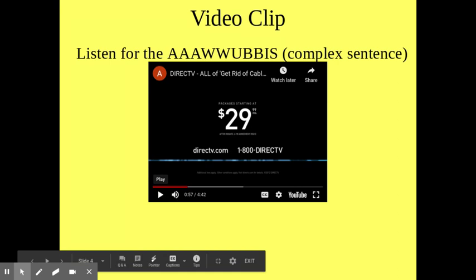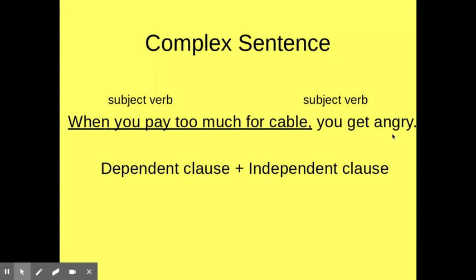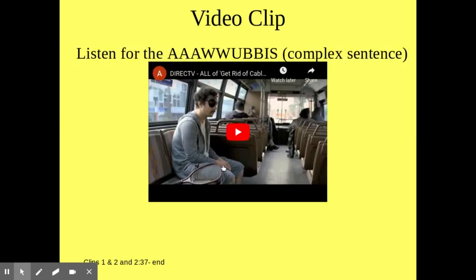Pretty funny clips, but notice the AWOOBIS in action — the complex sentence in action. 'When you pay too much for cable, comma, you get angry.' The first part has a subject and verb but doesn't have a complete thought — that's the dependent clause. 'You get angry' is the independent clause. When a sentence starts with an AWOOBIS, it must have a comma and the rest of the sentence afterwards.